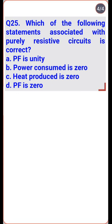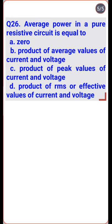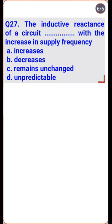For a purely resistive circuit, the power factor is unity — option A is correct. Average power in a pure resistive circuit equals the product of the RMS values of current and voltage — option D is right. The inductive reactance of a circuit increases with increase in supply frequency — option A is the right one.